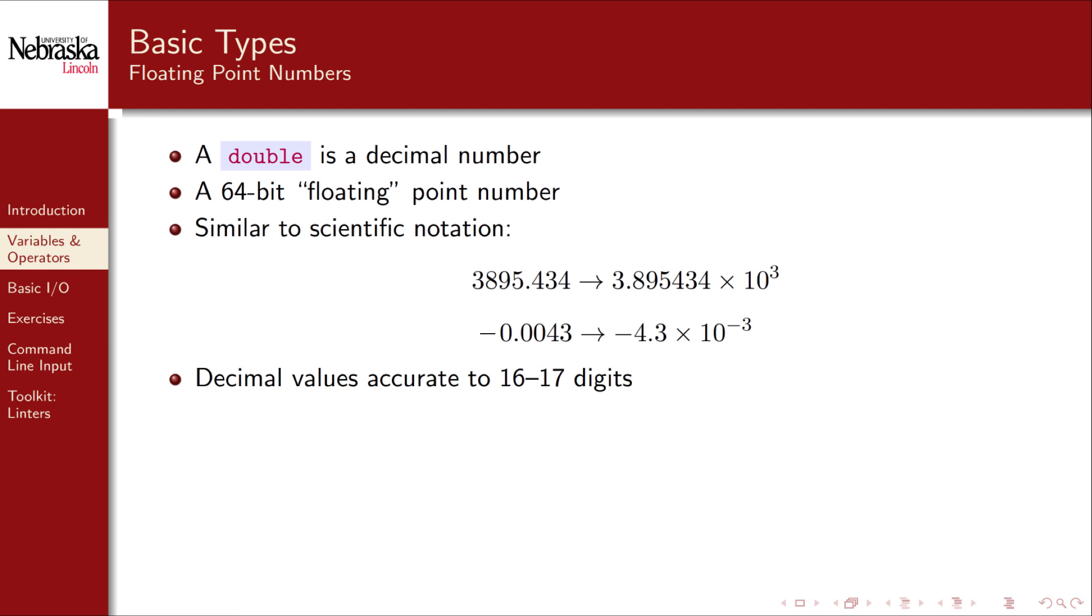Double variables are only accurate up to about 16 or 17 decimal places. As a consequence, some mathematical operations involving floating point numbers may result in a loss of precision. Another common type is float, but we won't use it in this series because it's only a 32-bit floating point number and provides far less precision. Here are some examples of double variable declarations.